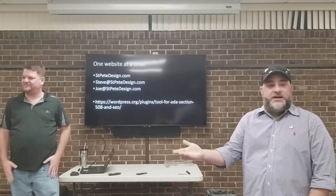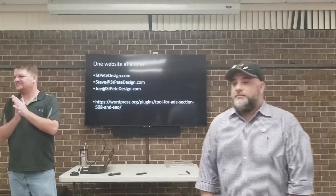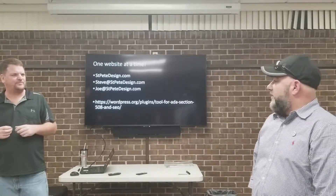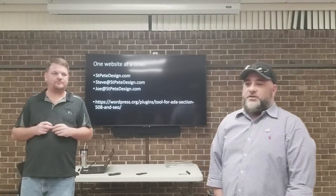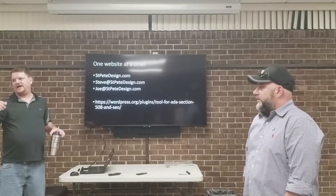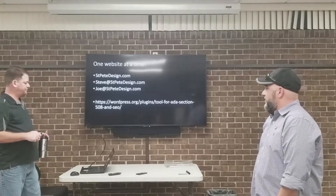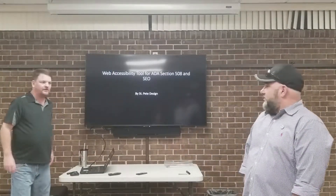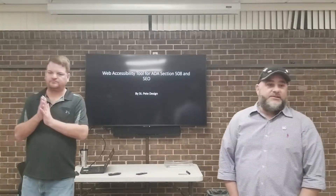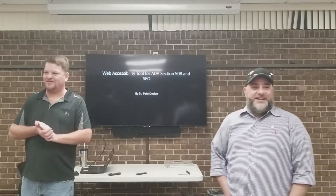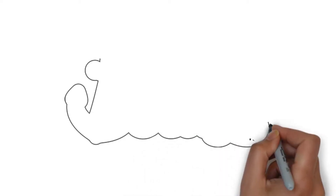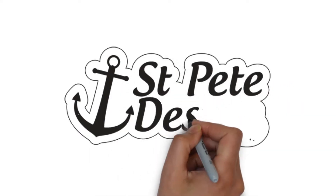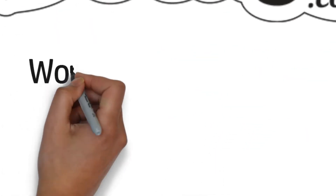Any last questions? The plugin is on our website on the web accessibility page, or you can get it through the WordPress repository from your admin area — just type it in and hit activate. We're Joe and Steve from St. Pete Design, and we appreciate everybody coming out and muscling through our on-the-cuff, on-the-fly talk here.